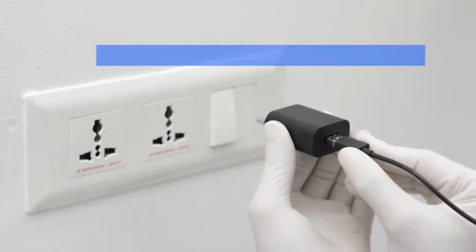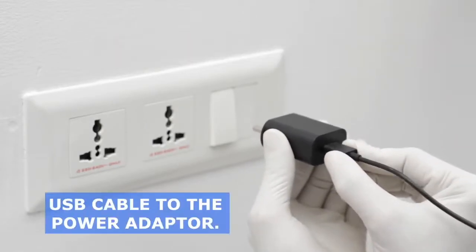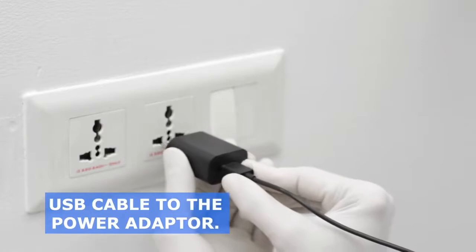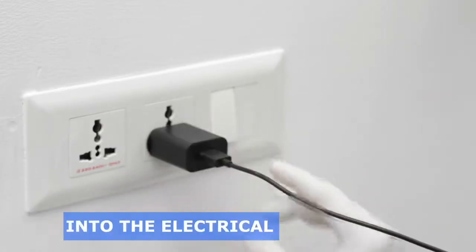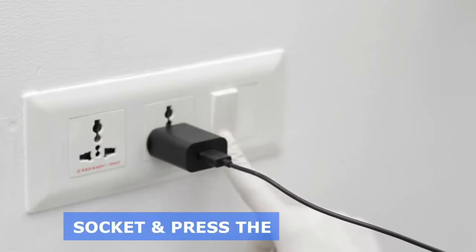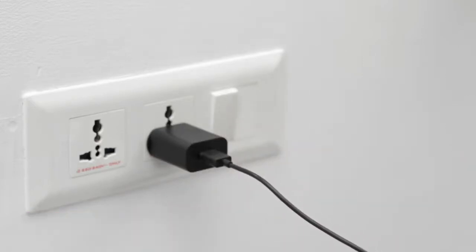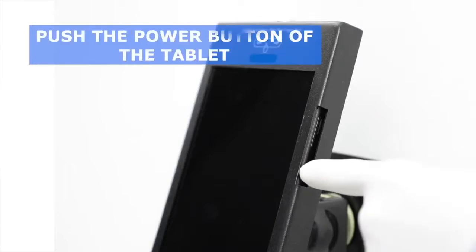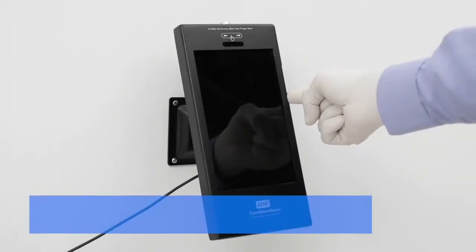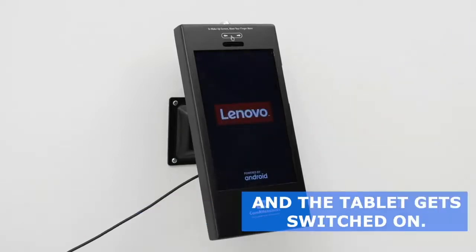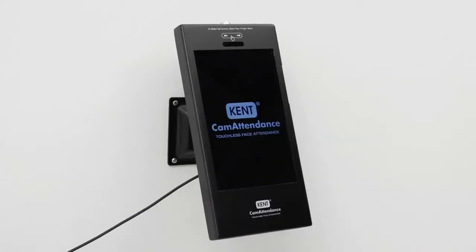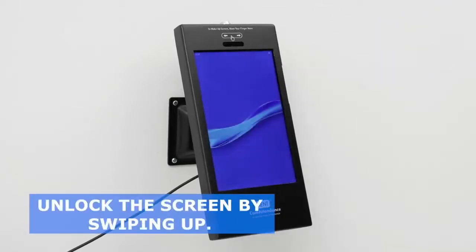Step 17: Connect the other side of the USB cable to the power adapter. Step 18: Plug the power adapter into the electrical socket and press the switch on. Step 19: Push the power button of the tablet through the opening provided on the right side of the frame and the tablet gets switched on. Unlock the screen by swiping up.